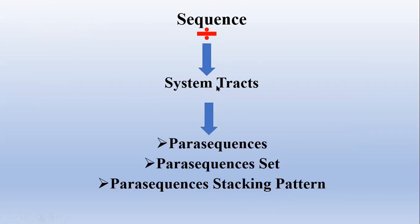The division of sequence into system tracts is done on the basis of sequence stratigraphic surfaces. In other words, the sequence stratigraphic surfaces serve as boundaries for the system tracts. The system tract is then re-divided into parasequences, and parasequences refer to the relatively conformable succession of genetically related strata.